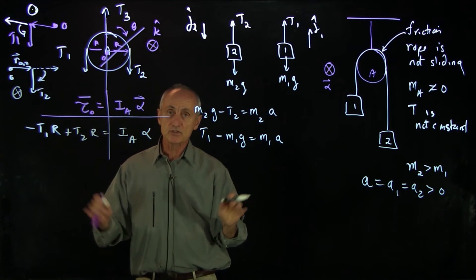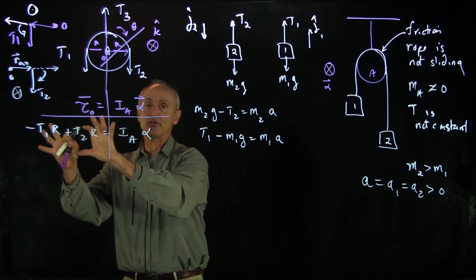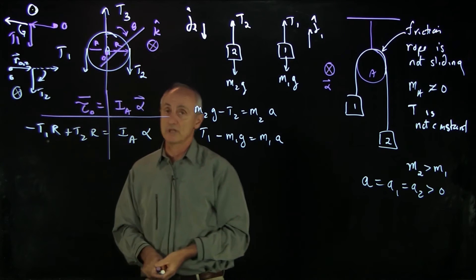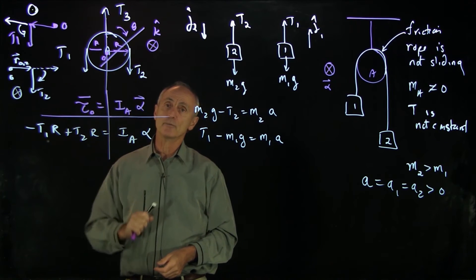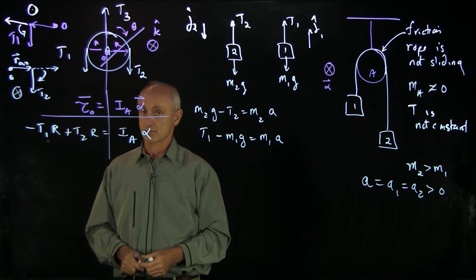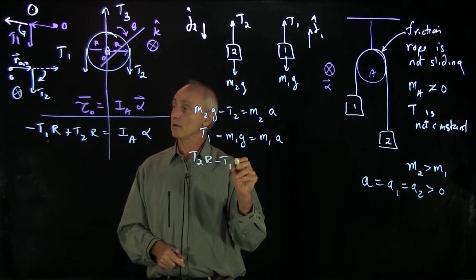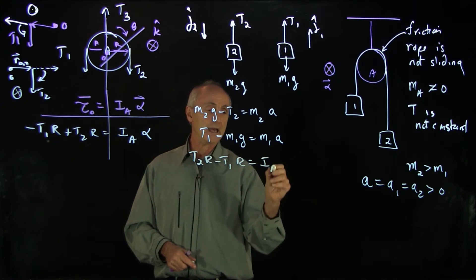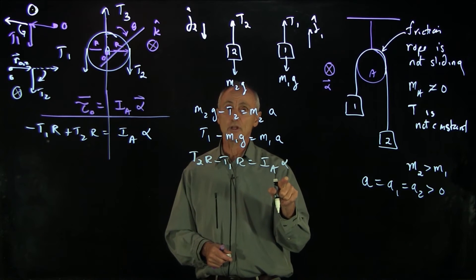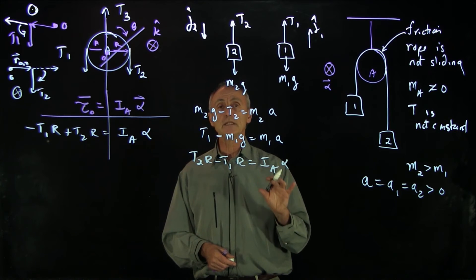Right away, we can see why the tension in the strings is not the same, because if these tensions were the same, this quantity would be zero. But the tensions can't be the same, because the pulley is rotating. And that rotational inertia of the pulley is coming from the fact that the two torques are not the same on both sides. So we now have our last equation here: T2R minus T1R equals I times alpha. But notice that I've introduced another variable. I have four equations and only three unknowns.